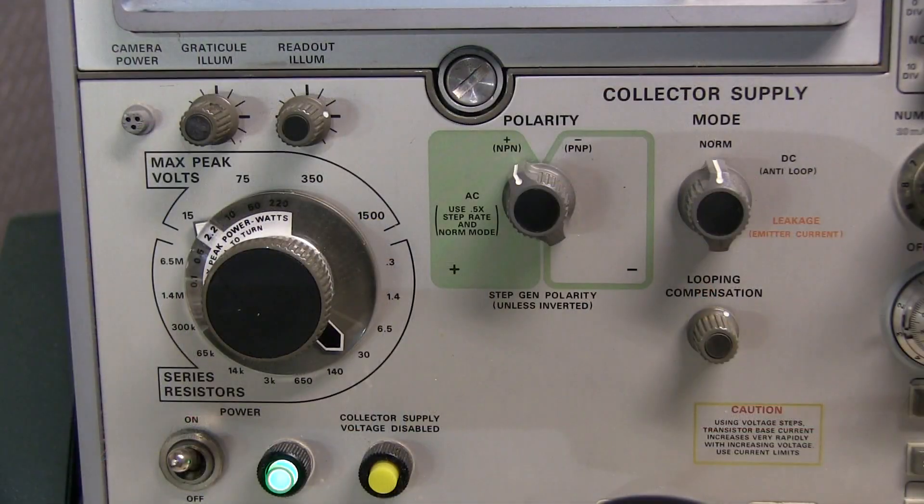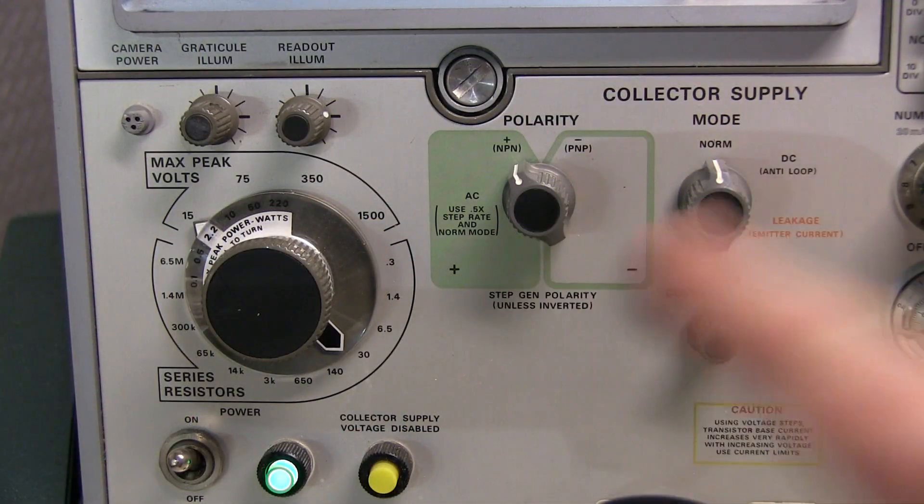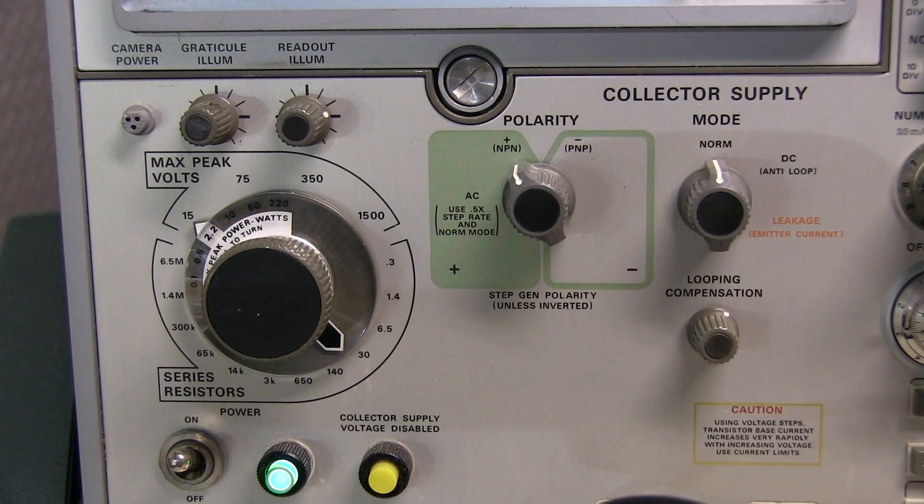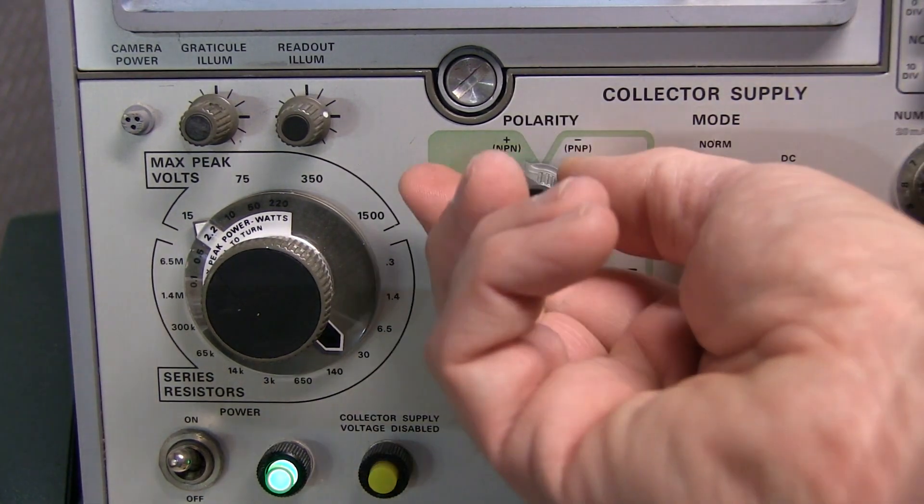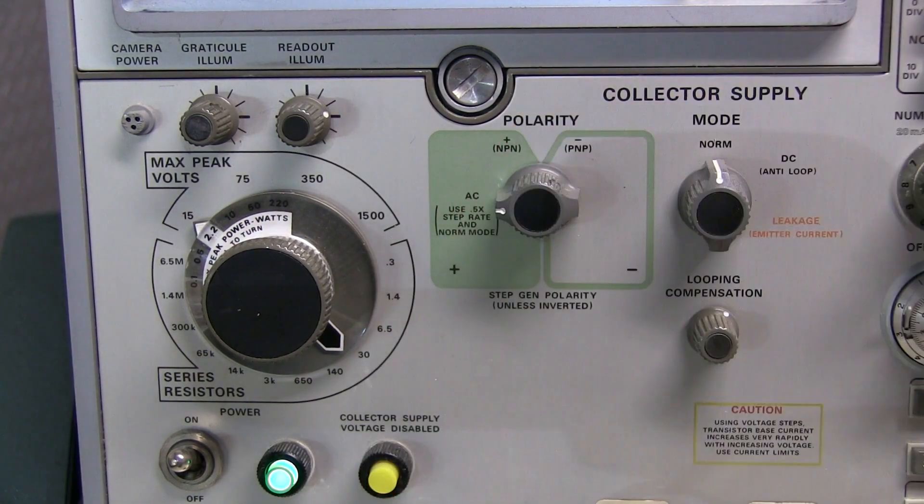Both the tracker and the octopus supply an AC signal, the swing is positive and negative, to the device under test. So we'll take our polarity switch and switch that to AC.